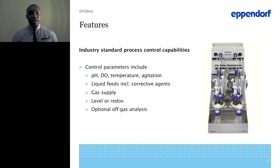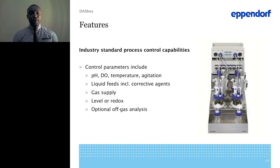Looking at industry-standard process control capabilities: the system can control parameters such as pH, DO, temperature, and agitation automatically without much worry. It also controls your liquid feed, including any corrective agents such as base and acid controls, controls gas delivery, and handles any level or redox probes you may have. It also comes with an option for gas analysis. Because of all these features, options, and flexibility, it is truly the optimal design tool for design of experiment (DOE).